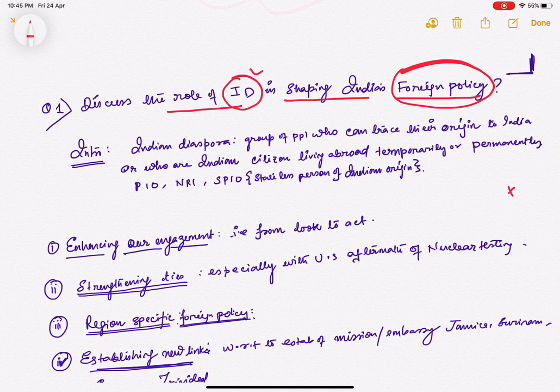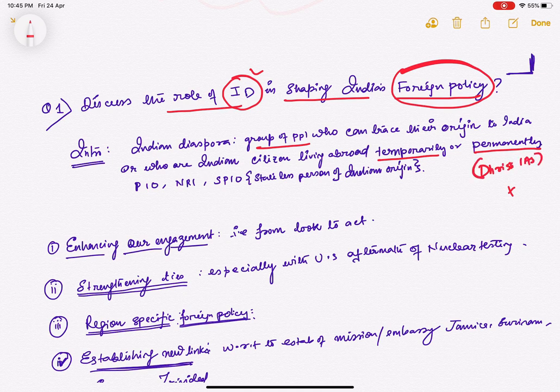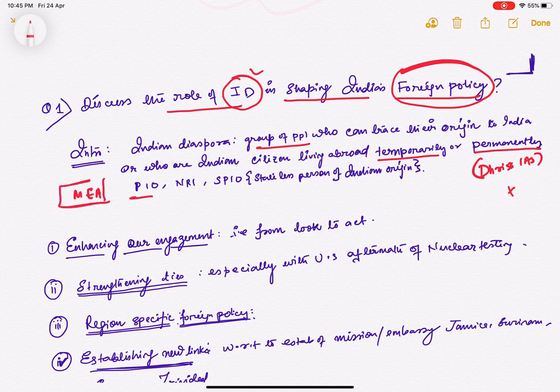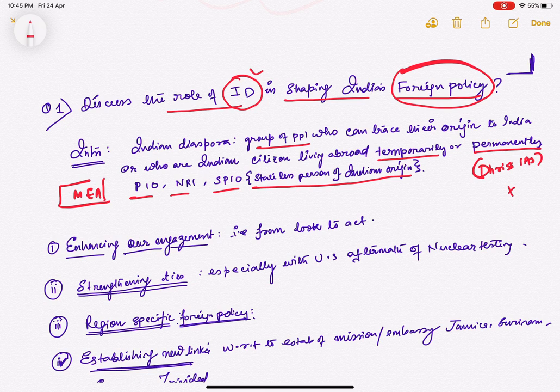The Indian diaspora is basically a group of people who can trace their origin to India or who are Indian citizens living abroad temporarily or permanently. This is the definition given by Drishti IAS. Further, they said it could be PIO, OIC, or NRI, but actually that is wrong. As per the MEA website, the Indian diaspora includes PIO, NRI, and SPIO. PIO means Person of Indian Origin, NRI means Non-Resident Indian, and SPIO means Stateless Person of Indian Origin. Examples are Tamils living in Sri Lanka, Hindus living in Pakistan, Afghanistan, or Bangladesh. Obviously their origin is India, but they cannot actually prove it now.